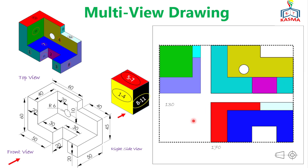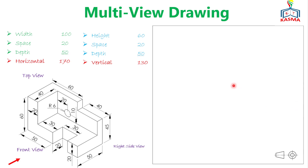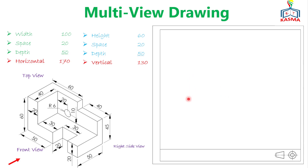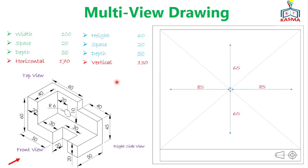To place this rectangle at the center of your working plane, first construct a border line and title block. Connect the diagonals of your working space — they meet at the center point. From the center, measure half of 170mm (which is 85mm) to the left and right, and half of 130mm (which is 65mm) upward and downward. This gives you the bounding rectangle for all three views.